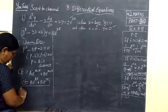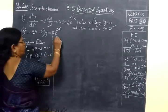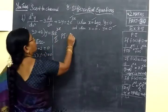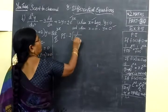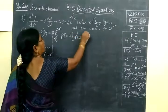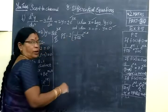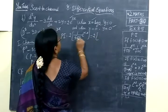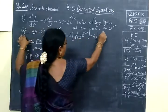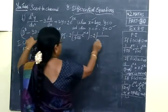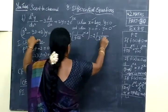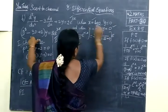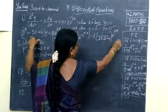Next you have to find particular integral. Particular integral is 1/f(D) times e^(αx). The denominator is D squared minus 3D plus 2. So 1/f(D) times e^(αx). Then e^(αx) is e^(3x). So α value is 3.